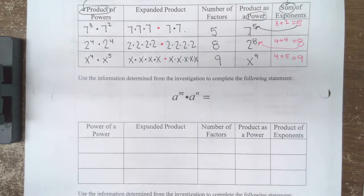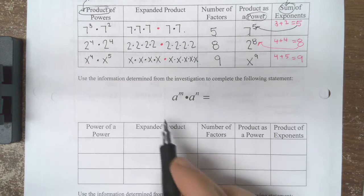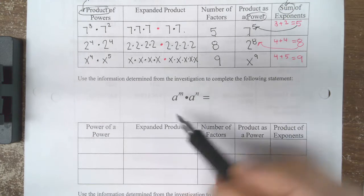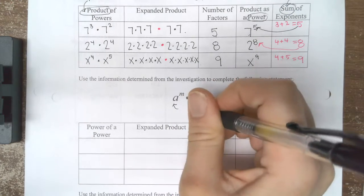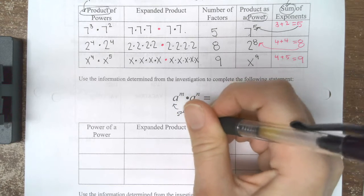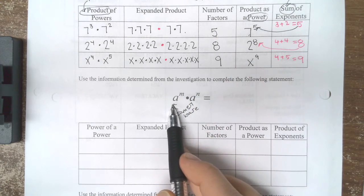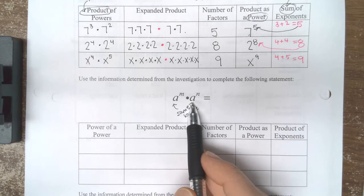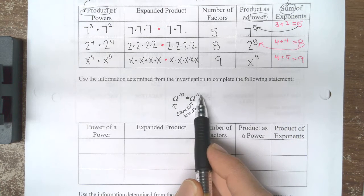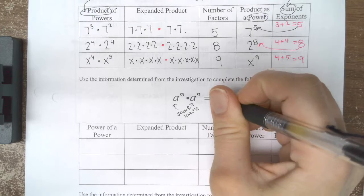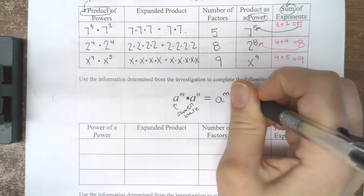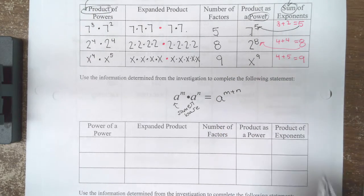So from this information we can conclude that this property exists: if I have a power, and it's important that they have to be the same base, and I'm multiplying something of the same base to one power times something to another power, then I can add my exponents together to simplify that.